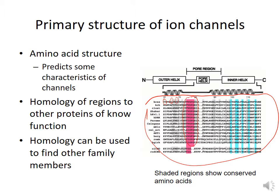What's important about the primary structure of these ion channels — that is, the amino acid sequence — is that it allows us to predict some of the characteristics of these channels, to make functional inferences about what parts of the ion channel might be involved in a particular function, and finally we can use this sequence of amino acids to predict the different families and subfamilies of the ion channels.